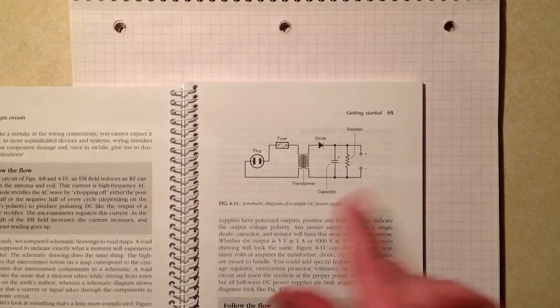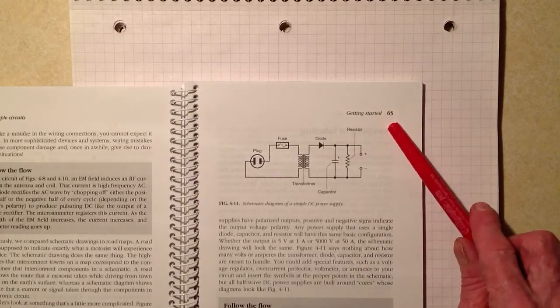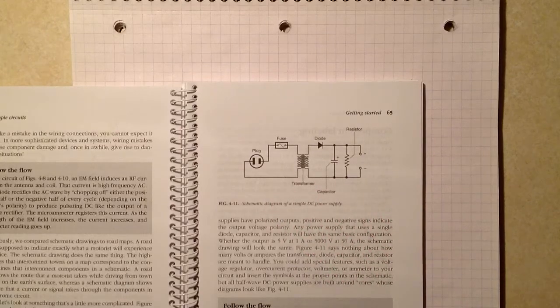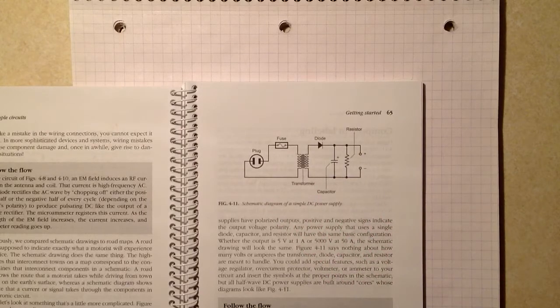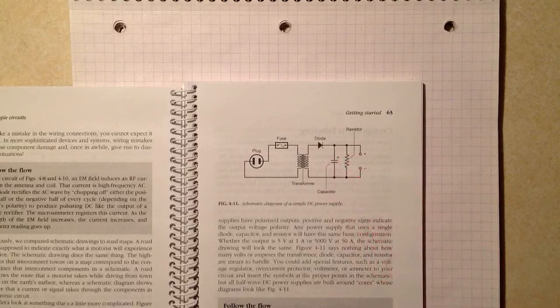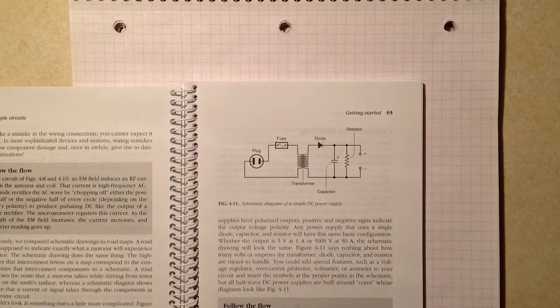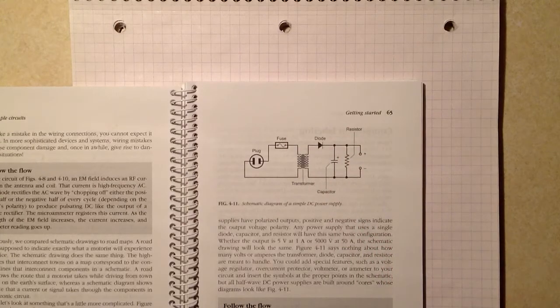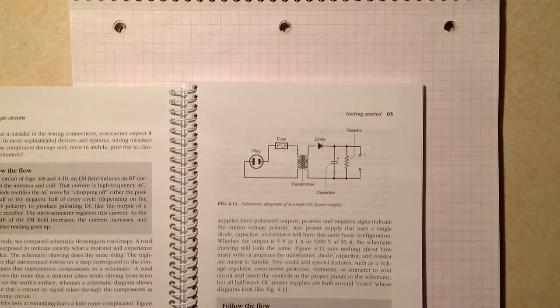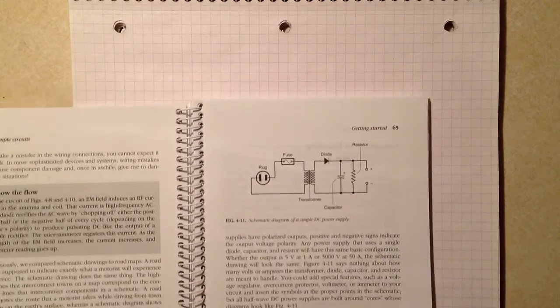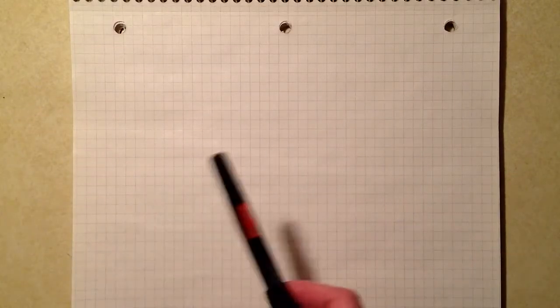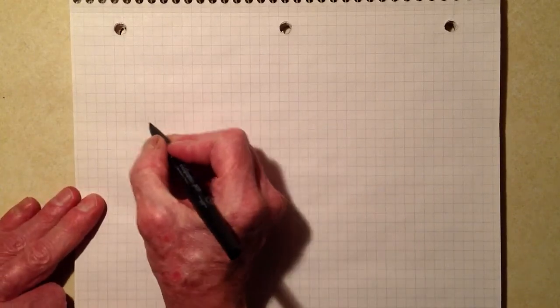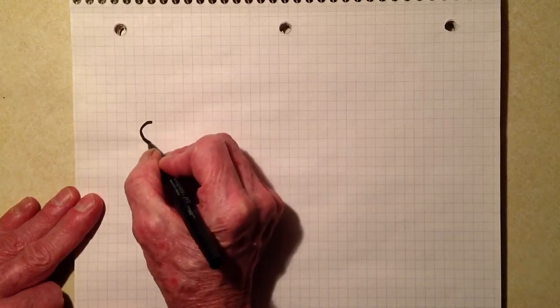But what I'd like to do now is look at page 65, figure 4-11, of a schematic diagram of a simple half-wave rectifier DC power supply. And I would like to redraw that diagram for you and describe how the current flows through it. So let's get started. I will redraw the diagram so you can see how it progresses, how the electricity progresses through it.